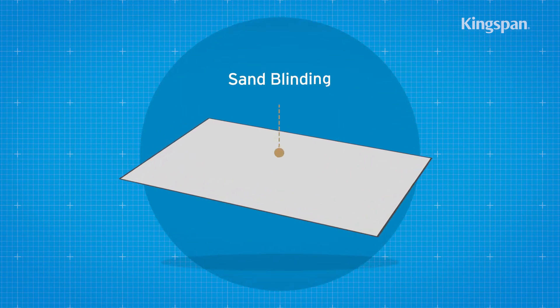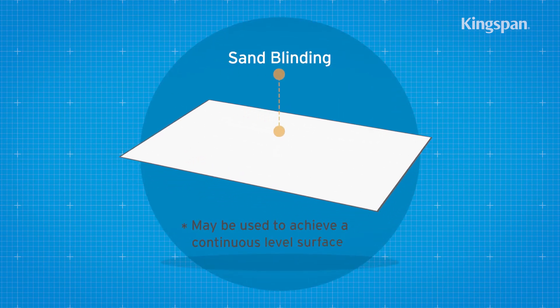A thin sand blinding may be used to achieve a continuous level surface.